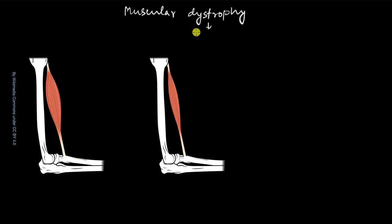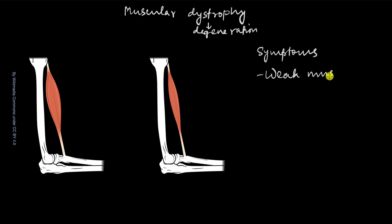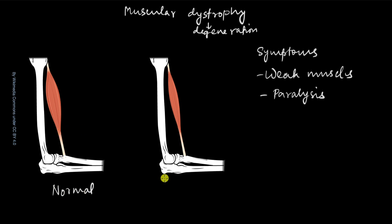Another disease which on the face of it might look similar is muscular dystrophy. 'Dystrophy' means degeneration. The symptoms are kind of similar — like myasthenia gravis — weak muscles and paralysis, but the reason is very different. The neuromuscular junction is not affected; the muscles themselves are affected. You can see the difference: this is a normal biceps muscle in our arm, whereas the diseased muscle is very thin and degenerated.